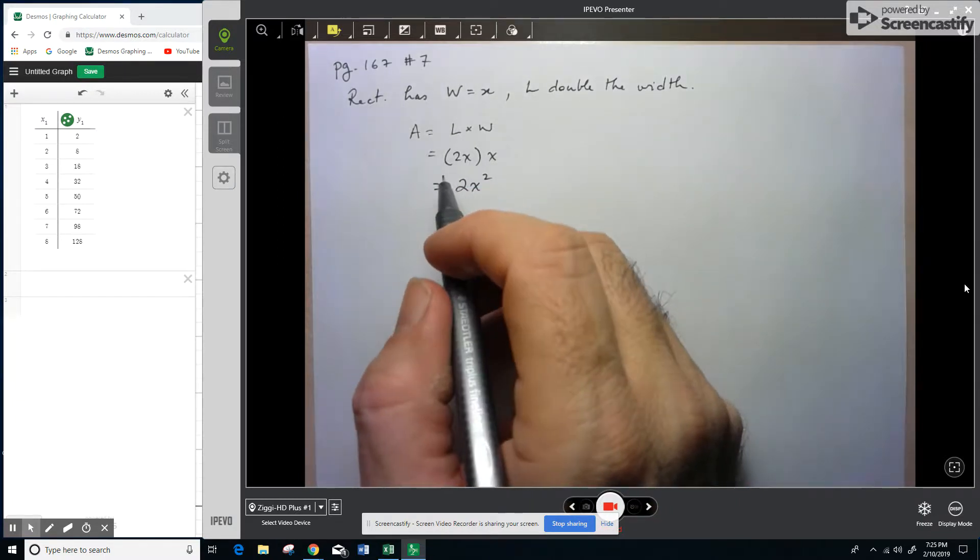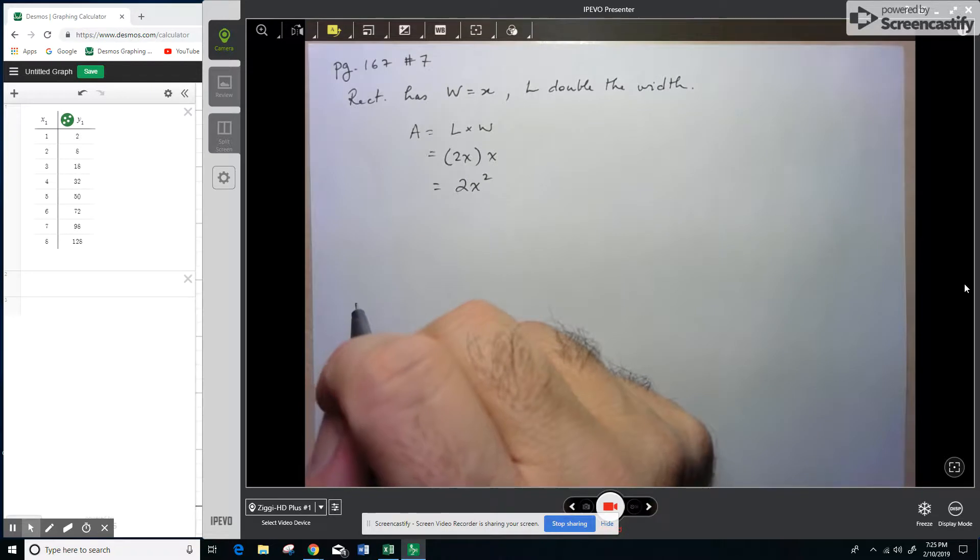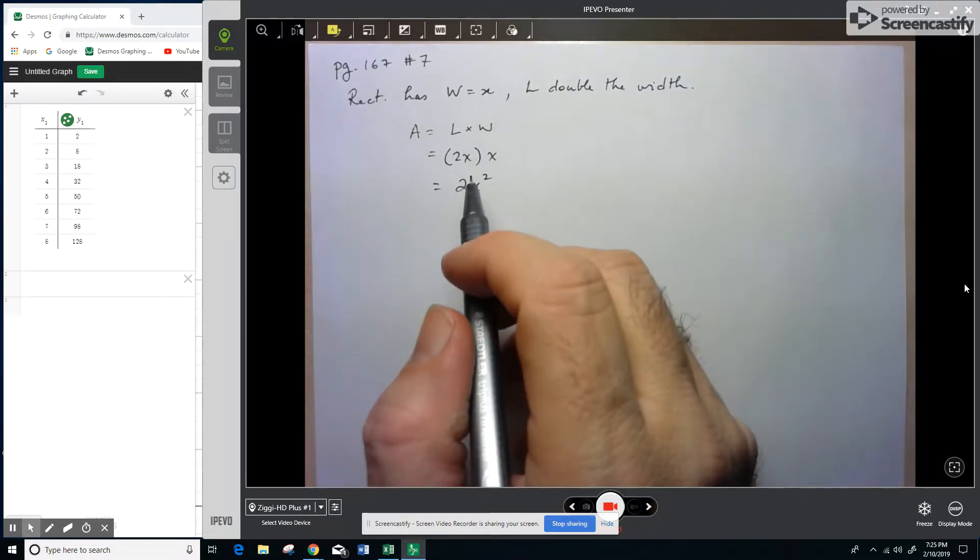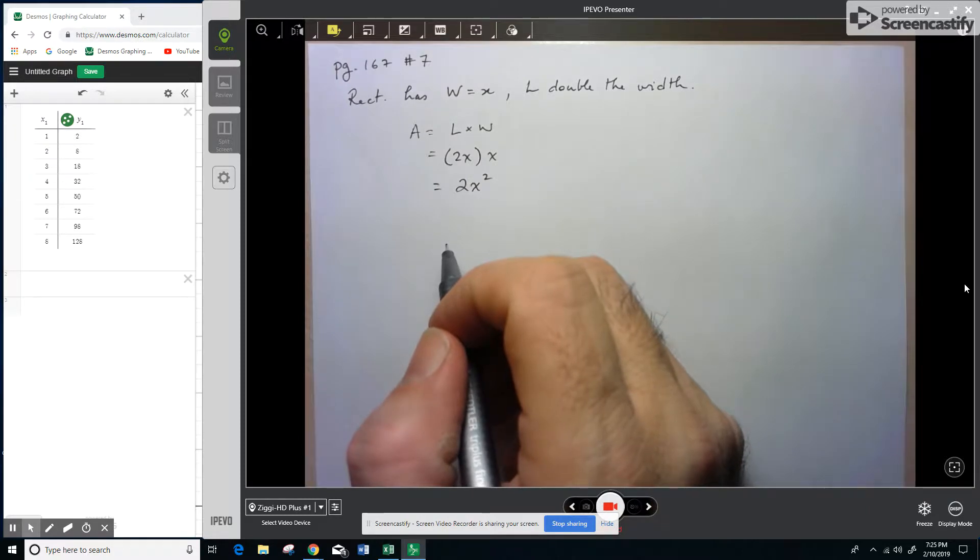So right off the bat, we can see that analytically. So remember our three ways of representing a function or a relation, one of them being the analytic, shows that it's not a linear relationship.